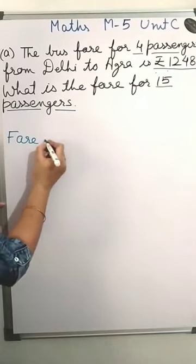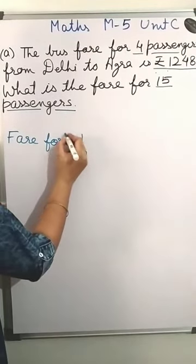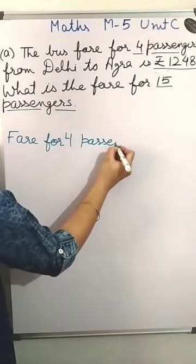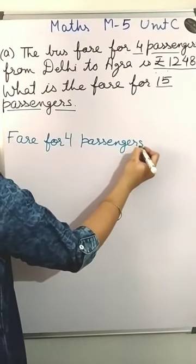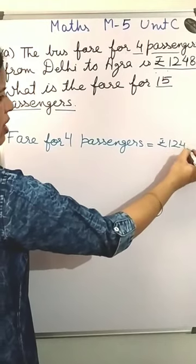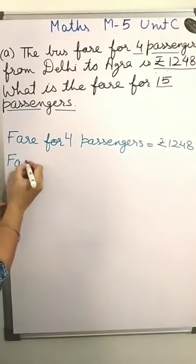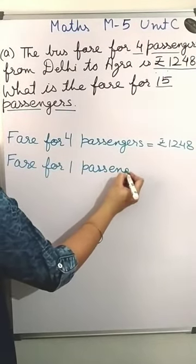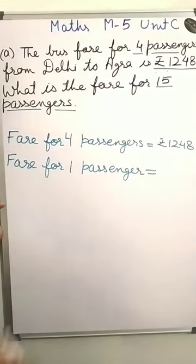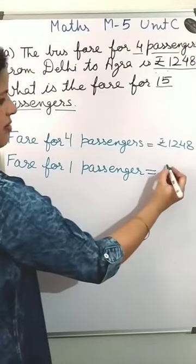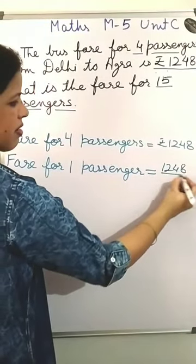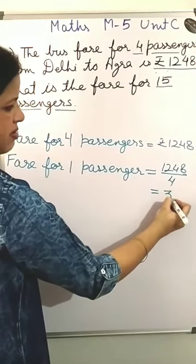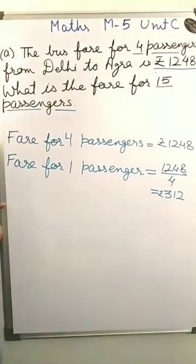Fare for 4 passengers is equal to rupees 1248. Now fare for 1 passenger — because we are calculating fare for one passenger, so now we divide. The division gives rupees 312. This is the fare for one passenger.